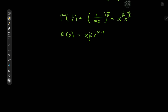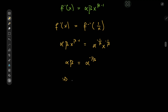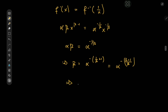Now that we have the derivative and the required inverse, we apply the condition that the derivative at x equals the inverse at 1/x. That gives us α·β·x^(β−1) = α^(−1/β)·x^(−1/β). Comparing coefficients on left and right-hand sides gives us α·β = α^(−1/β), and expanding gives β = α^(−1/β − 1) = α^(−(β+1)/β). Hence we have α in terms of β.